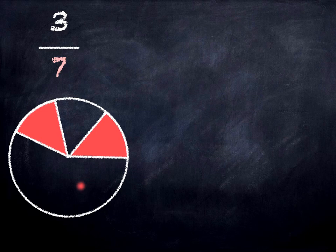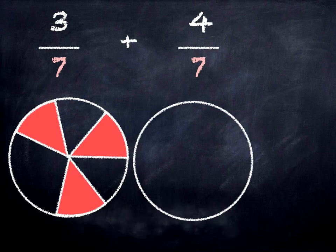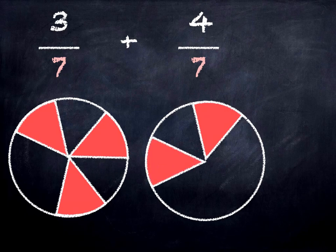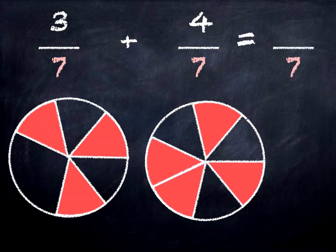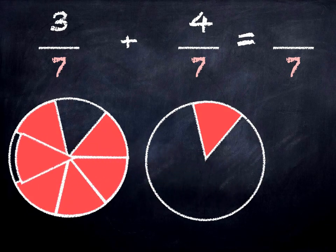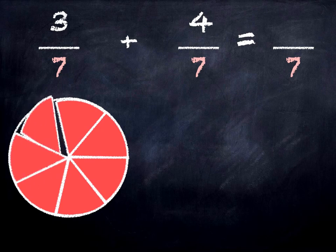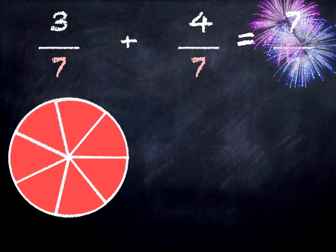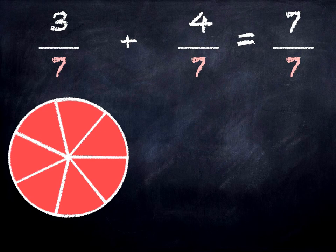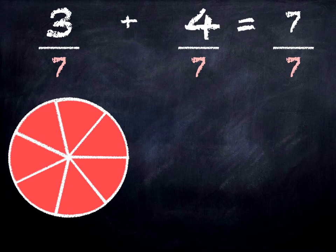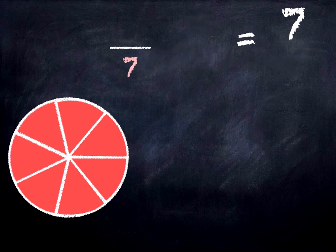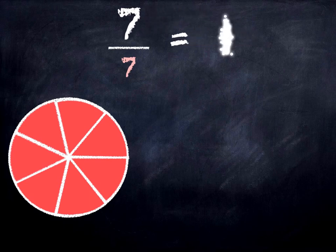Three sevenths plus four sevenths is how many sevenths? Let's put them all together. What do we have now? We have seven sevenths. Three sevenths plus four sevenths is seven sevenths. Three plus four equals seven. And we know that seven sevenths is the same as saying one.